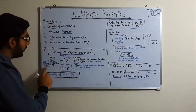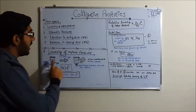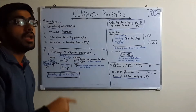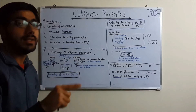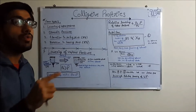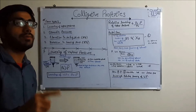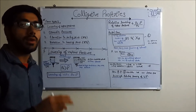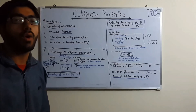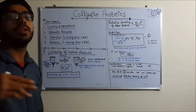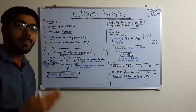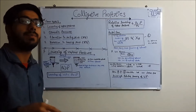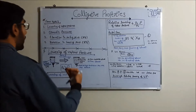Vapor pressure of pure solvent is denoted by P⁰, and vapor pressure of solution is denoted by P. This is because vapor pressure of solution is equal to vapor pressure of solute plus vapor pressure of solvent. A solution is a mixture of solute plus solvent, so vapor pressure of solution equals vapor pressure of solute plus vapor pressure of solvent.